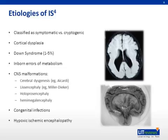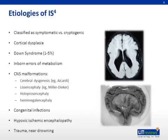Perinatal injuries like hypoxic ischemic encephalopathy and neonatal hypoglycemia, as well as postnatal insults such as traumatic injury and near drowning, have also been implicated in the development of infantile spasms.